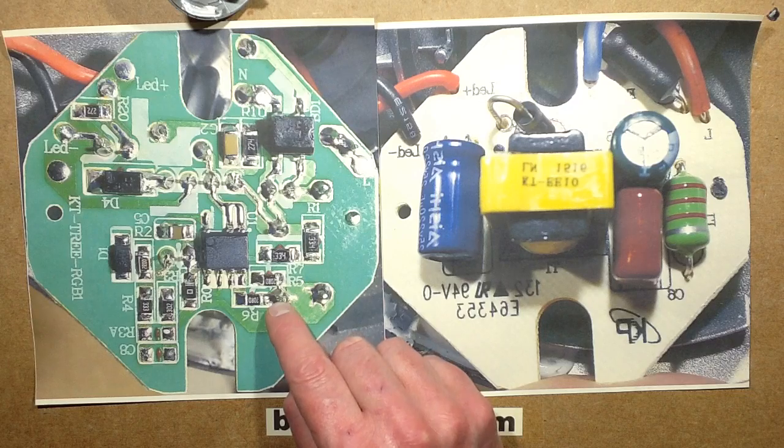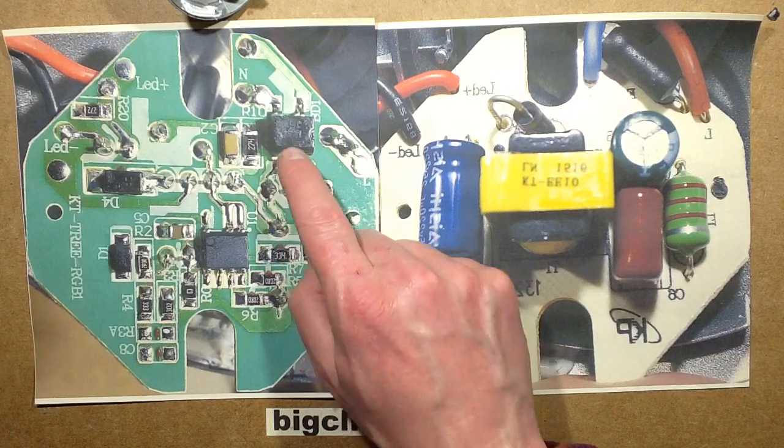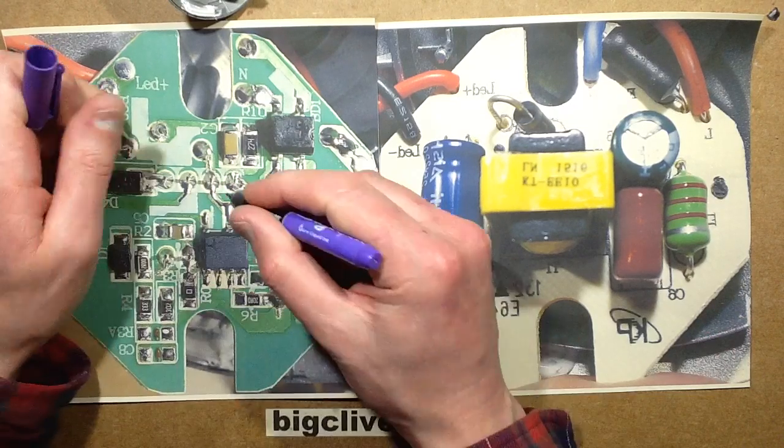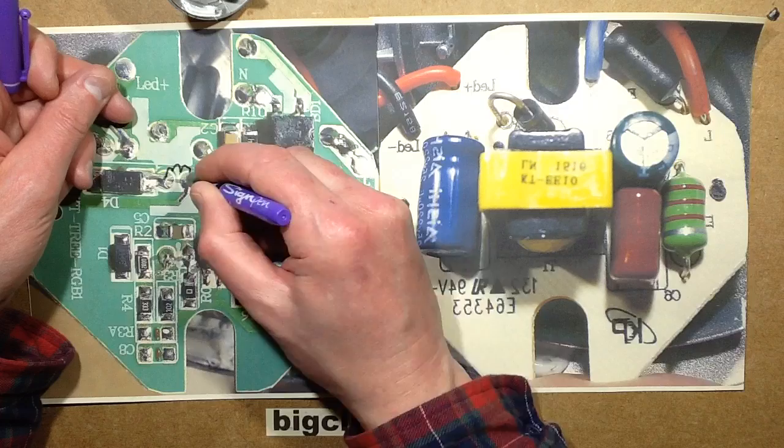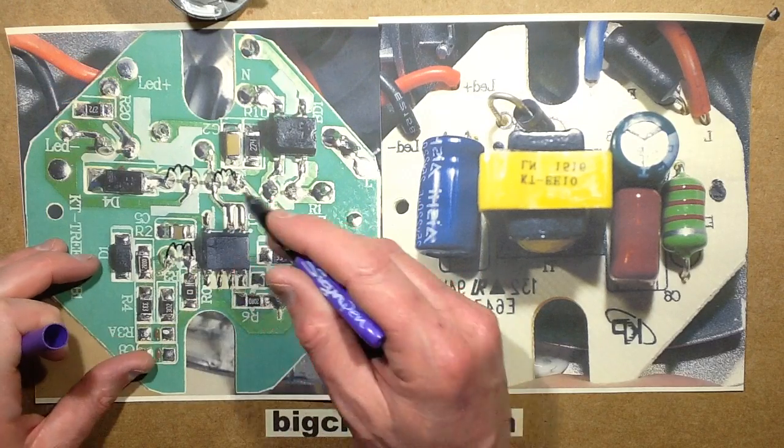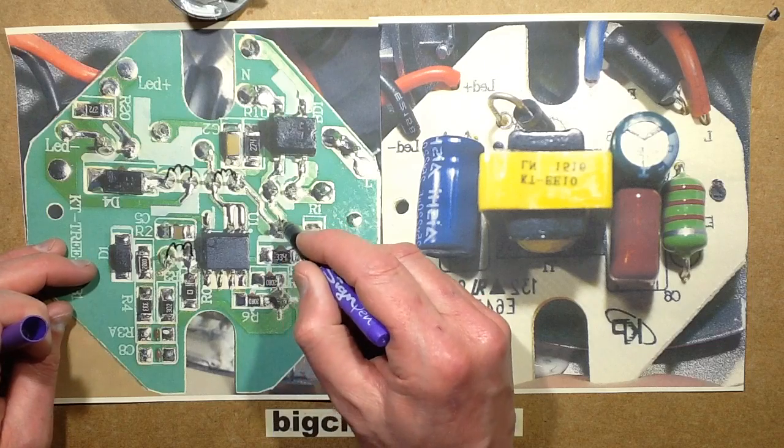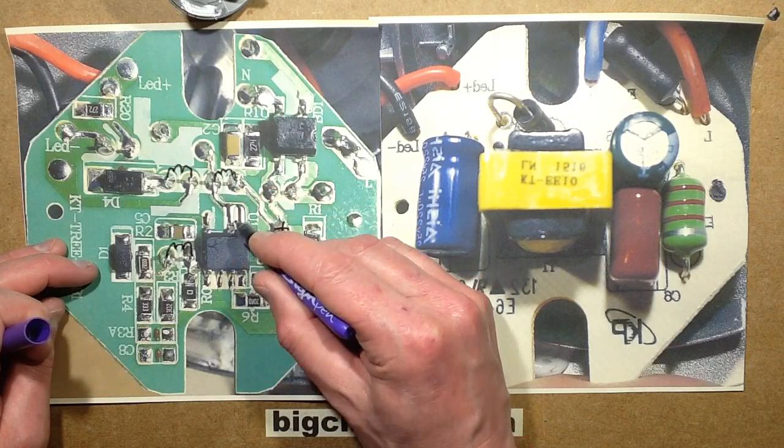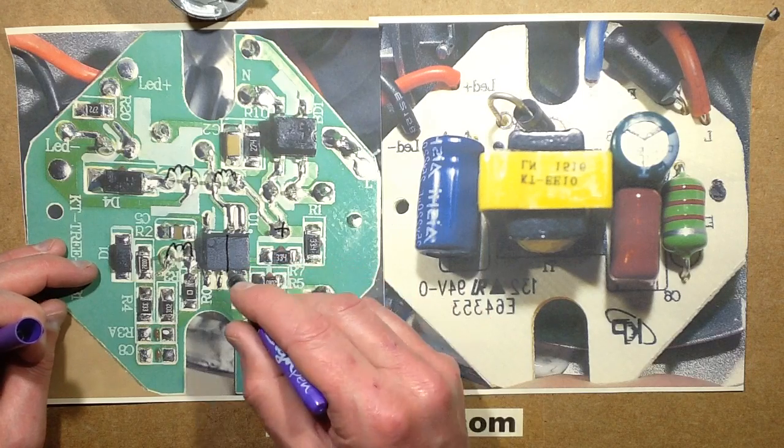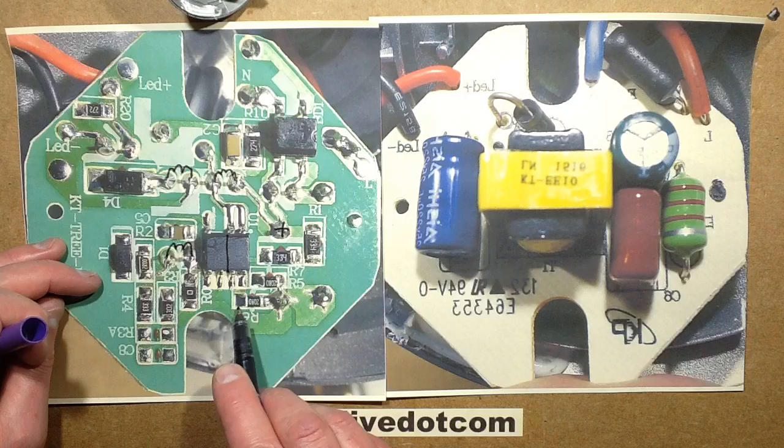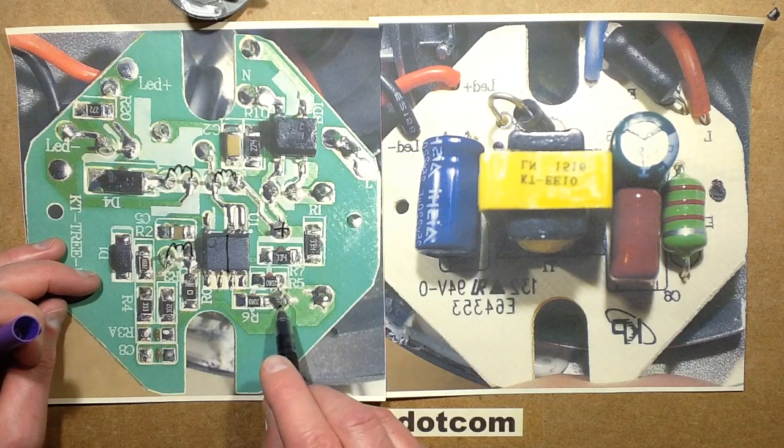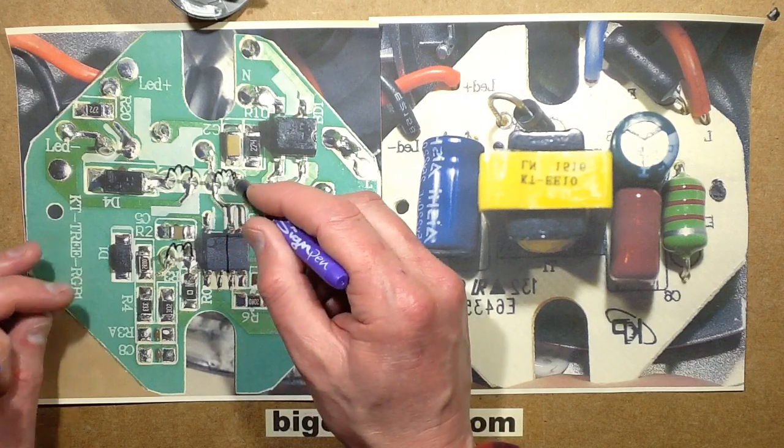And then it gets filtered through this choke, 222, which is 2.2 thousand microhenries, 2.2 millihenries. Then goes to this capacitor here which is just acting as a buffer, just a little bit more smoothing and filtering. On the chip we've got the positive going to this winding here, this is obviously one winding and this is another winding, and then we've got another winding here on this transformer. So three distinct windings.